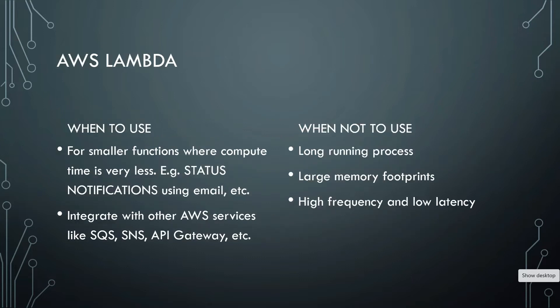You use Lambda for smaller functions where compute time is very low, because that is where cost is incurred. You have to make sure that particular code execution time — the compute time — is very short. Lambda integrates well with other AWS services like SQS, SNS, API Gateway, etc. A very common use case is setting up Lambda with API Gateway for a serverless architecture, which will be covered in other videos.